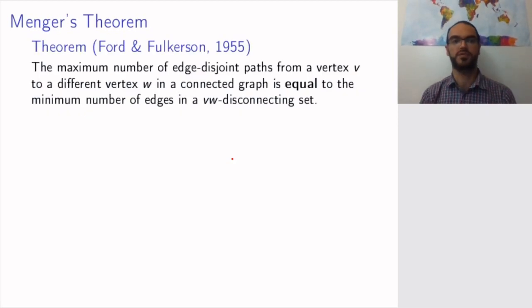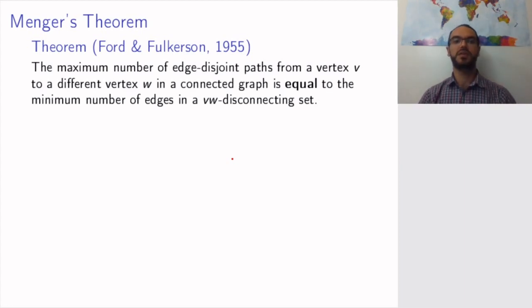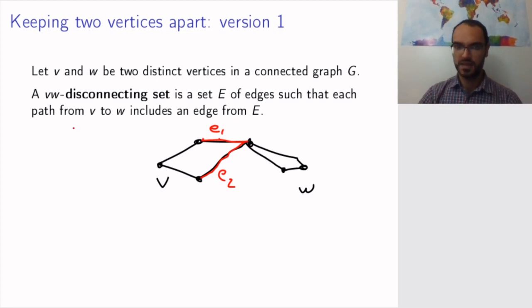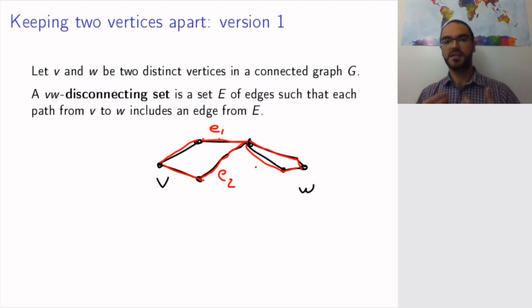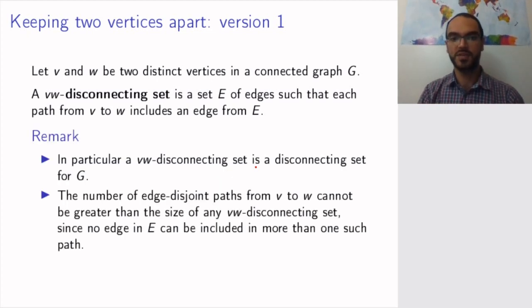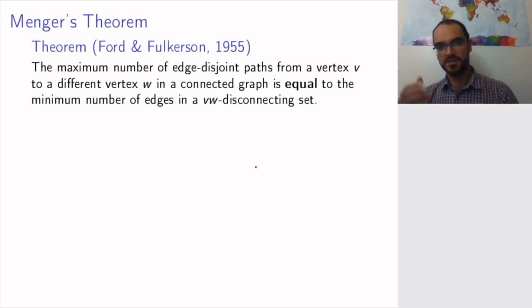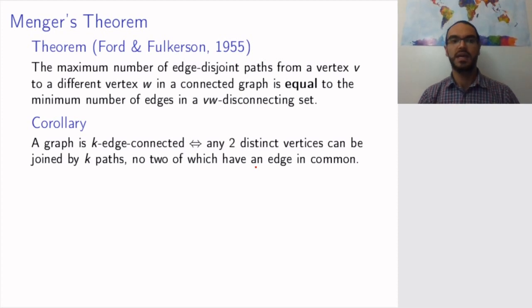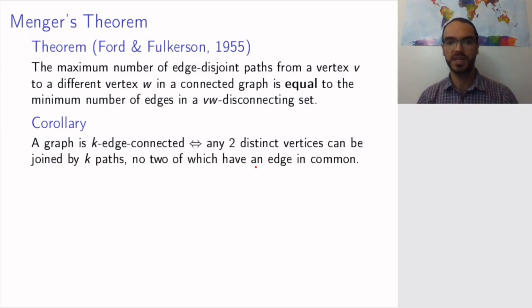The remarkable thing is that the maximum number of edge disjoint paths from V to W is in fact equal to the minimum number of edges in a VW disconnecting set. In the example, we can find exactly two paths, matching the size of the disconnecting set. This is convenient because finding disconnecting sets is sometimes easier than finding entire collections of paths. As a consequence, a graph is k edge connected if and only if any two distinct vertices can be joined by k edge disjoint paths — which is Menger's theorem.